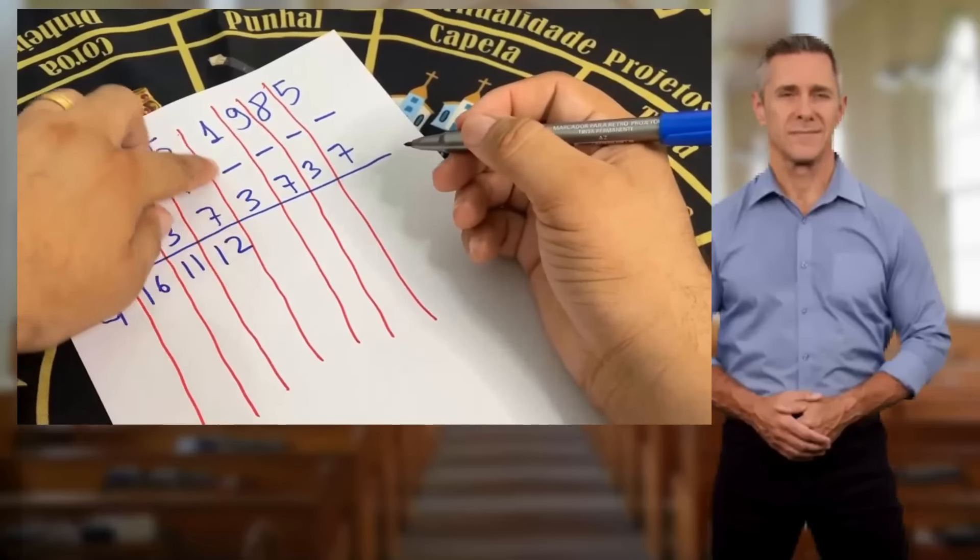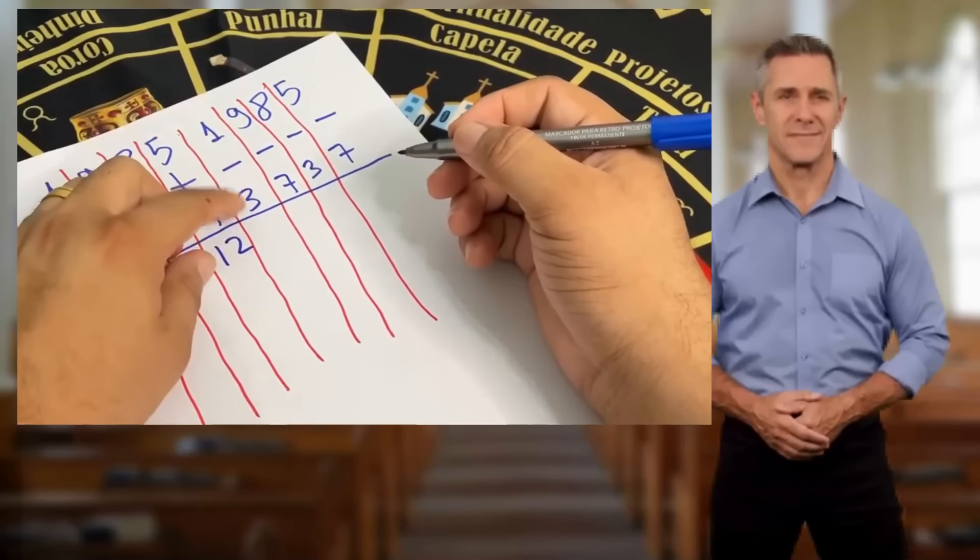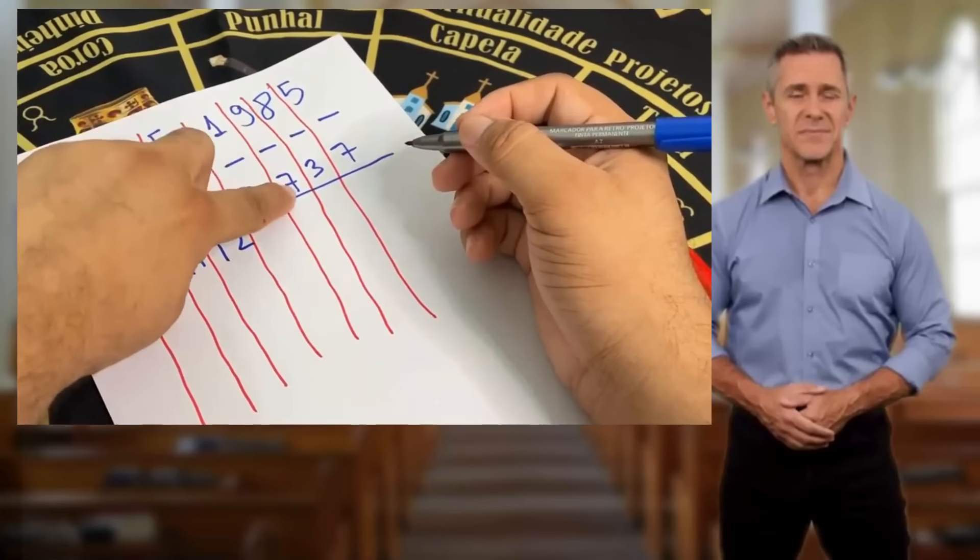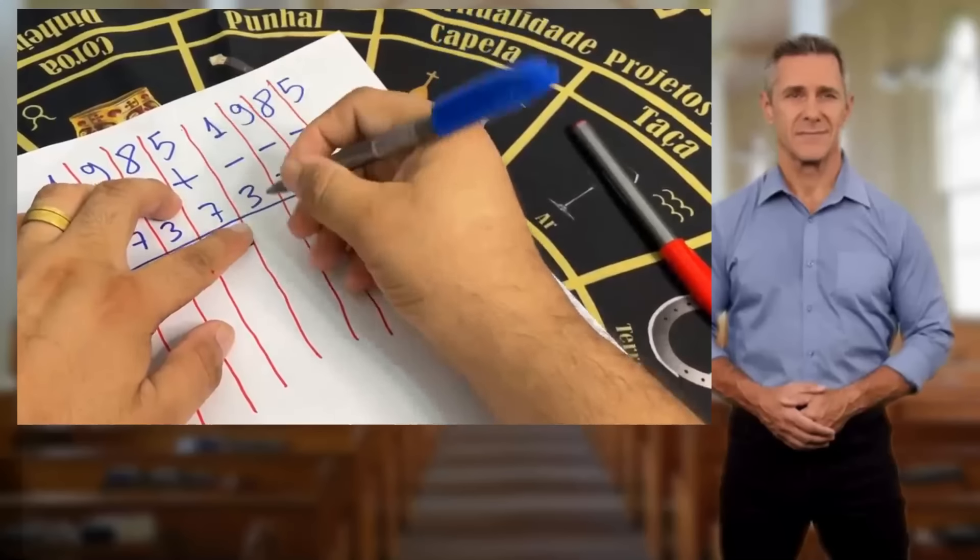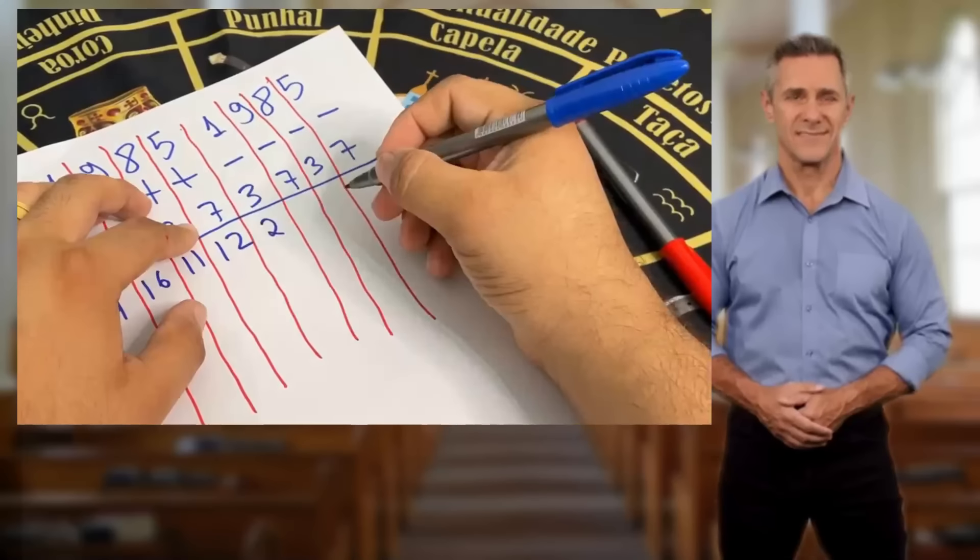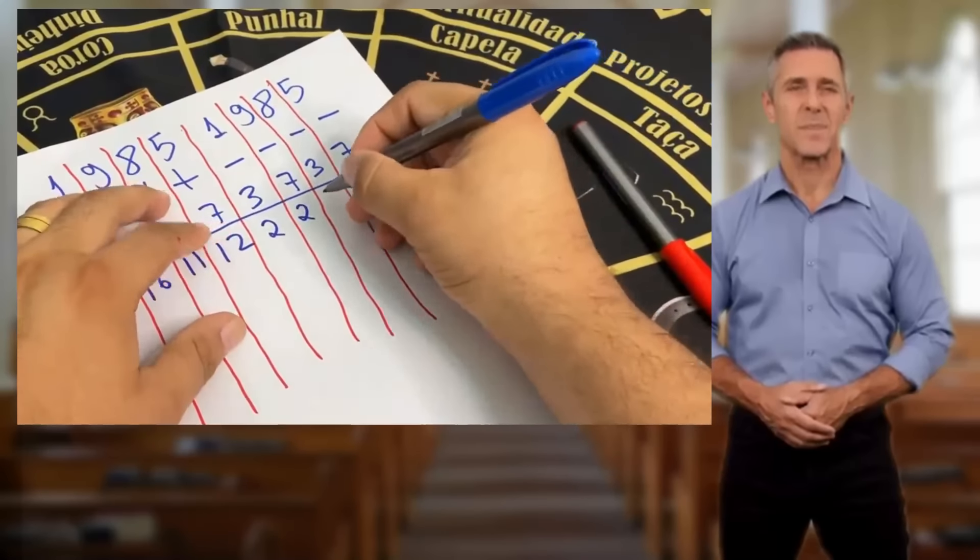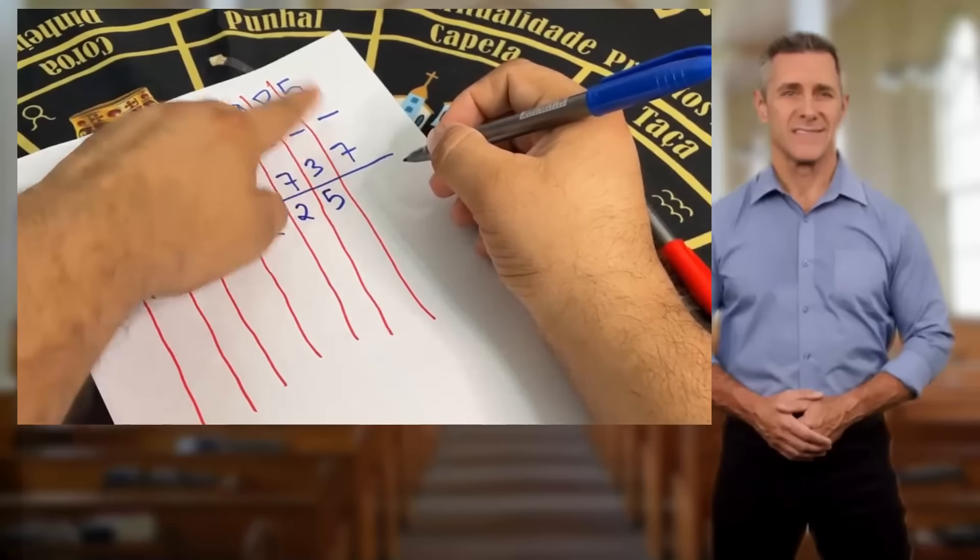Now, when we get to the subtraction part, we'll do the following. We'll always subtract the largest number by the smallest number. Okay, let's do it. 3 minus 1 is 2. 9 minus 7 is 2. 8 minus 3 is 5. 7 minus 5 is 2.